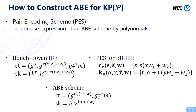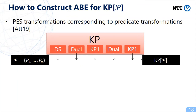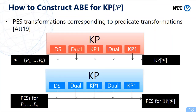From a pair encoding scheme and group description, we can recover an ABE scheme. The predicate KP of P can be obtained by applying three transformations — direct sum, dual, and KP1 — to the predicate set P. Atapadung showed that there exist corresponding transformations for direct sum, dual, and KP1. So we can obtain a pair encoding scheme for the predicate KP of P by applying the pair encoding scheme transformations for P1 to Pn.